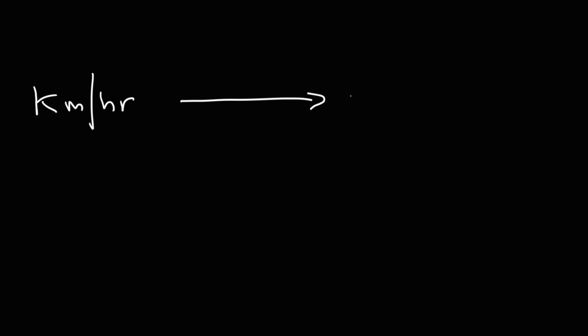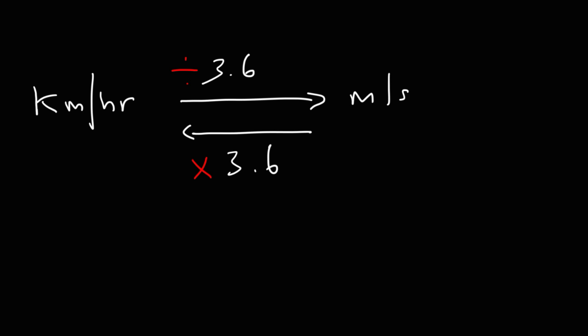If you have a value in kilometers per hour and you want to convert that to meters per second, what you need to do is divide your value by 3.6 and that will give you the answer in meters per second. Now if you have a number in meters per second and you want the answer in kilometers per hour, you need to do the opposite — multiply by 3.6.